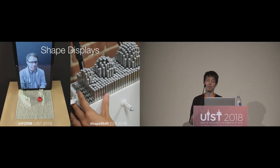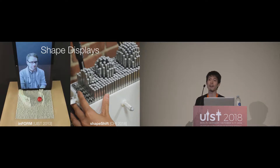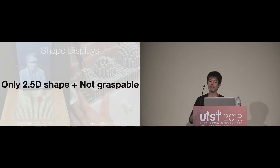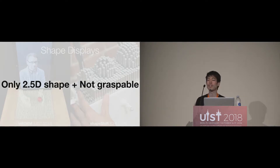The first approach to making dynamic physical objects is the shape display. The shape display can dynamically render arbitrary 2.5D shapes which users can actually touch and interact with as tangible objects. However, existing shape displays can only render 2.5D shapes, and the generated shapes cannot be grasped or used as physical objects, as the pins are attached to the tabletop surface.